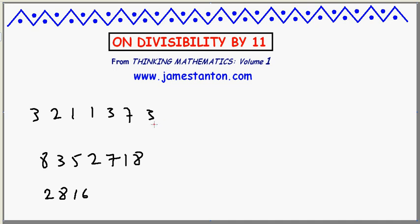What I'm meant to do to test for divisibility by 11, apparently is to do the alternating sum of its digits. So let's go plus 3, then minus 2, then plus 1, then minus 1, then plus, minus, plus. And then work out that alternating sum.